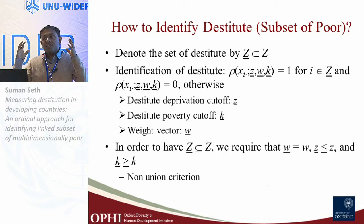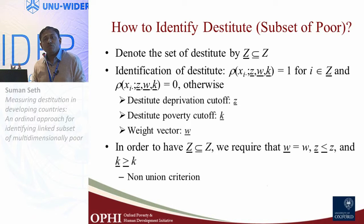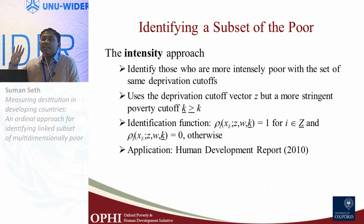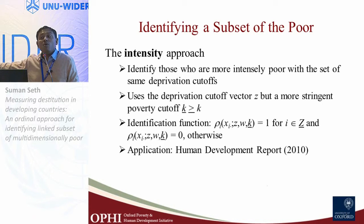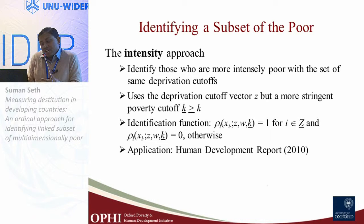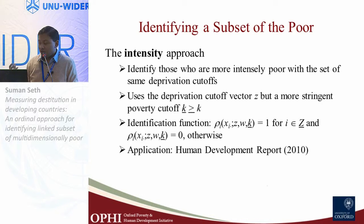Within that framework, there are different approaches. The first is the intensity approach, which looks at the extent of multiple deprivations. For example, if someone is identified as poor when deprived in three out of ten indicators, you might identify a person as much poorer if they are deprived in five or more indicators. This has been applied in the Human Development Report to construct the proportion of the 'severely poor.'